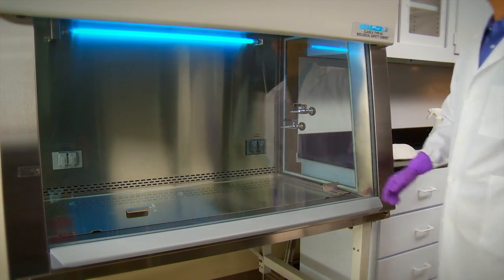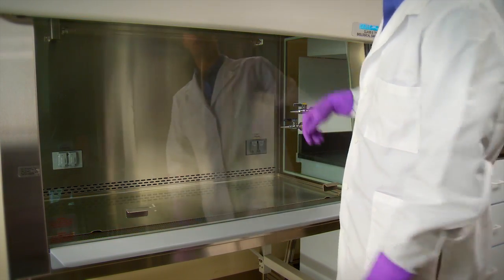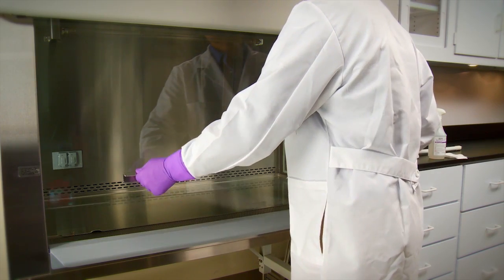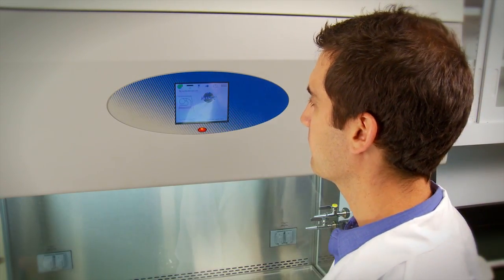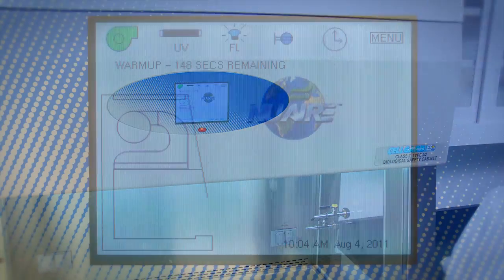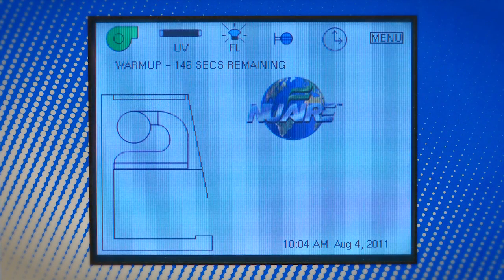There's more to safely turning on your BSC than simply flipping a switch. Cabinet blowers should be operated at least three to five minutes before beginning work to allow the cabinet to purge. This purge will remove any particulates in the cabinet.